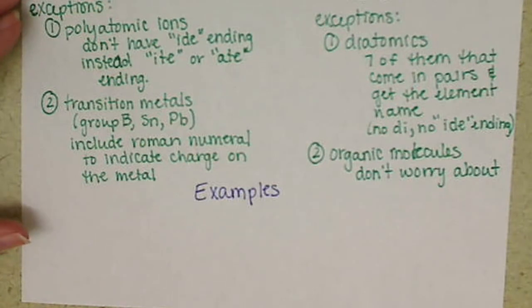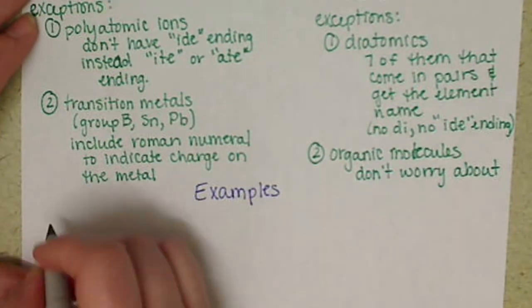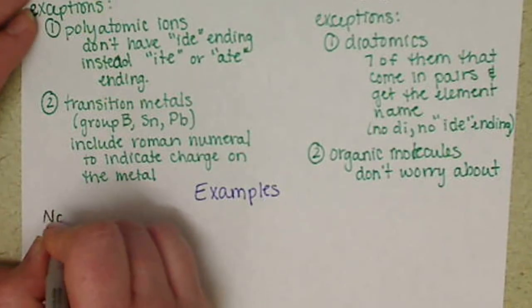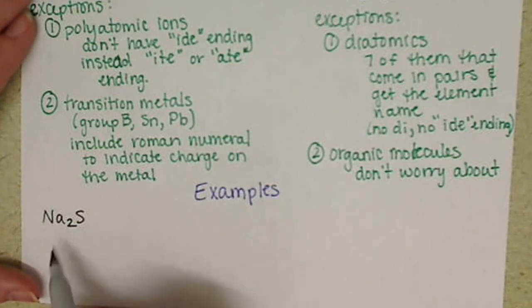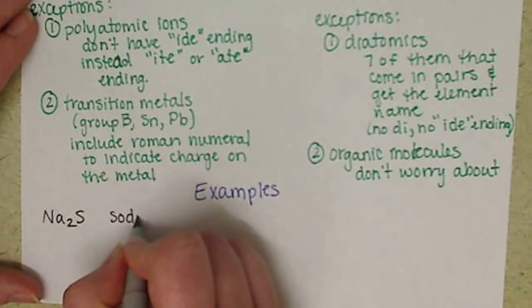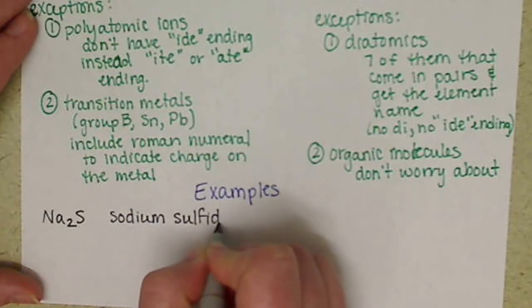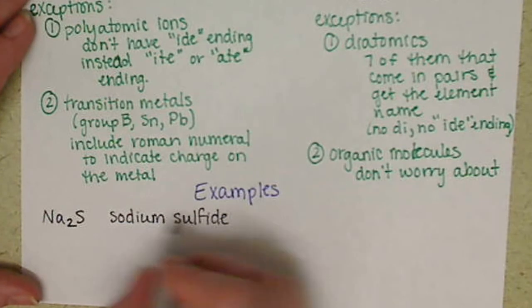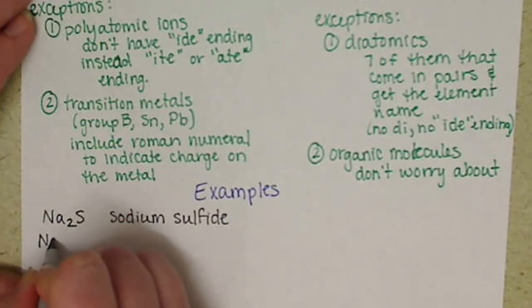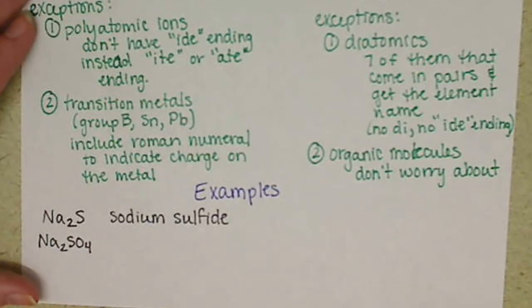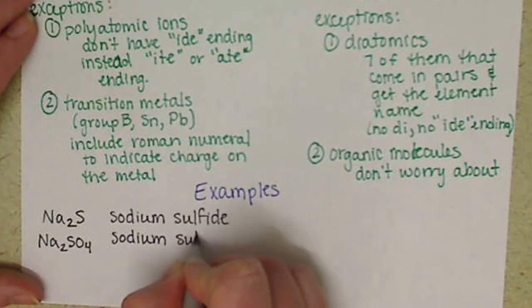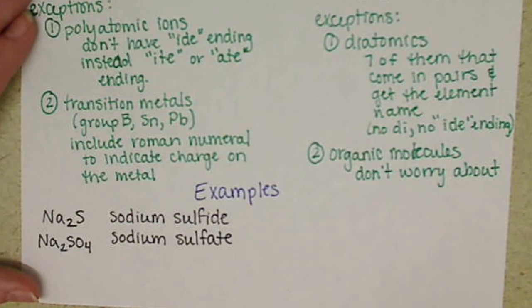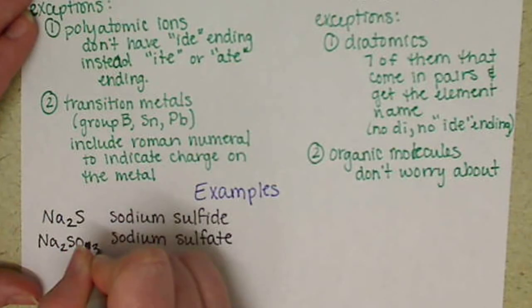Some examples are always helpful to have. Over on our ionic side, we have Na2S. Na is sodium, it's a metal, that's how we know this is ionic. This is called sodium sulfide. If we had Na2SO4, remember SO4 is a polyatomic ion, so this is sodium sulfate.